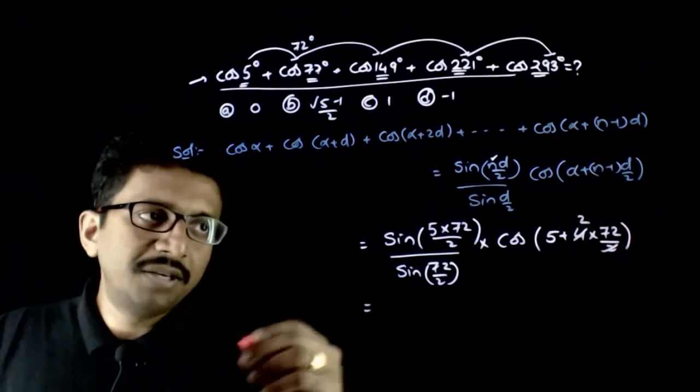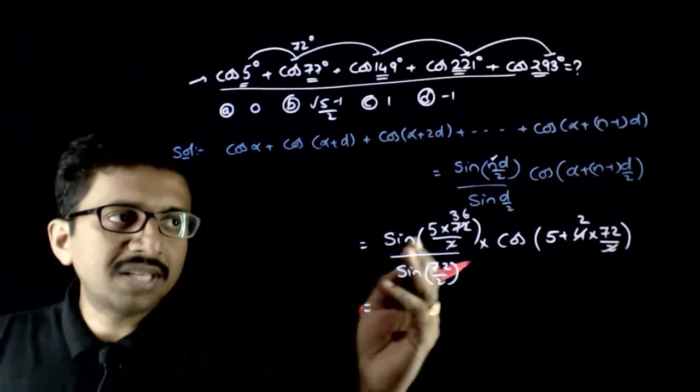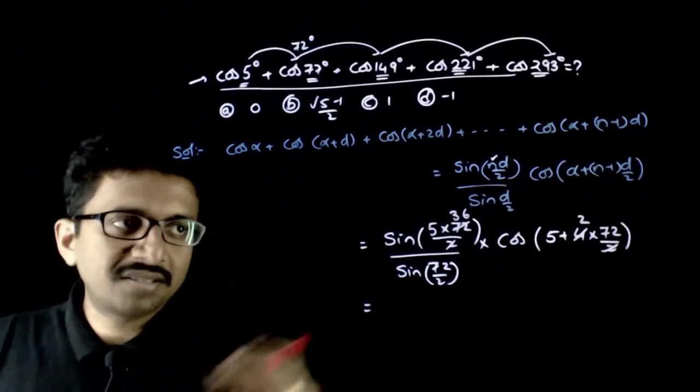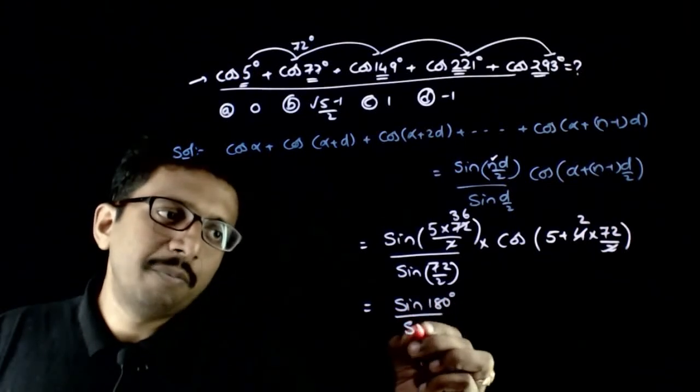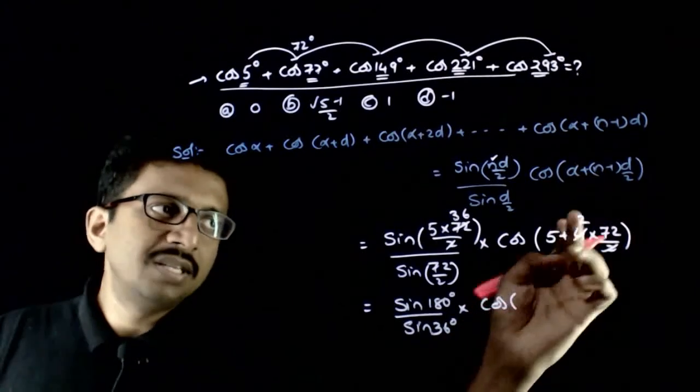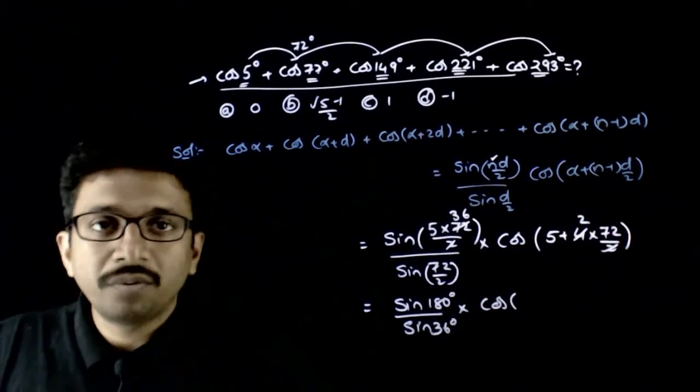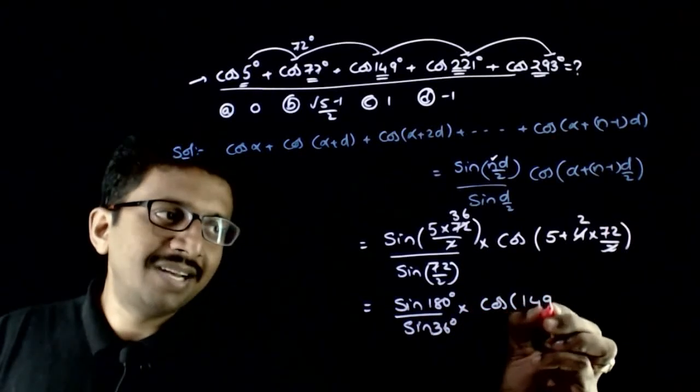This gets cancelled out to 36 times. So sin of 5 times 36 is nothing but sin 180. Sin 180 degrees by sin 36 degrees times cos of (72 times 2 is 144 degrees plus 5 is 149 degrees).